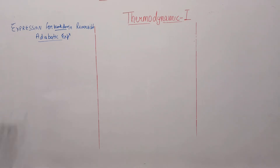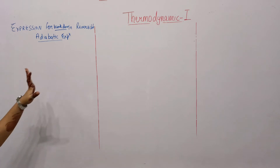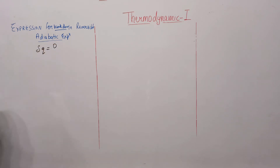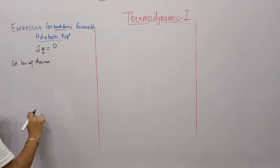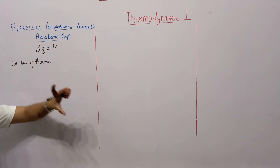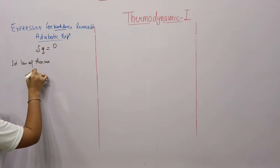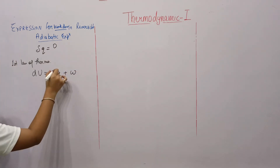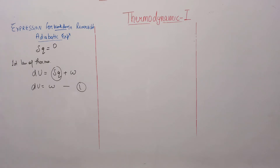Now we derive the expression for work done in reversible adiabatic expansion. Since adiabatic is given, change in heat = 0. Applying the first law of thermodynamics: dU = dq + W. Since dq = 0, dU = W. This is our first equation.